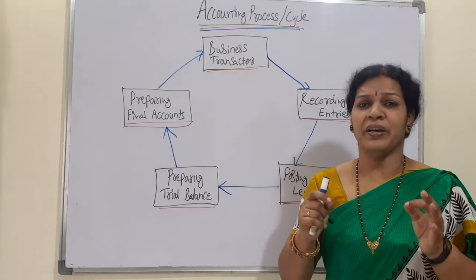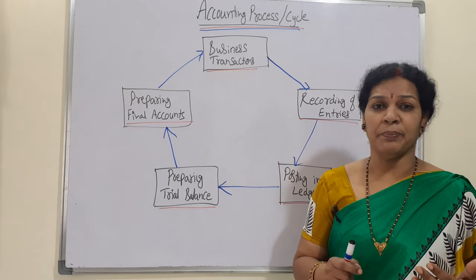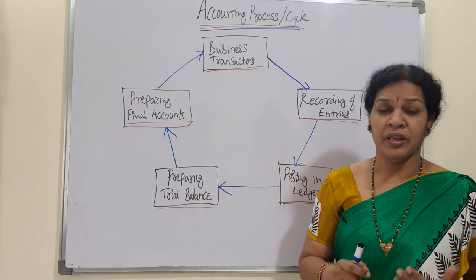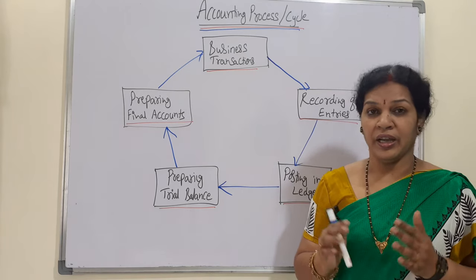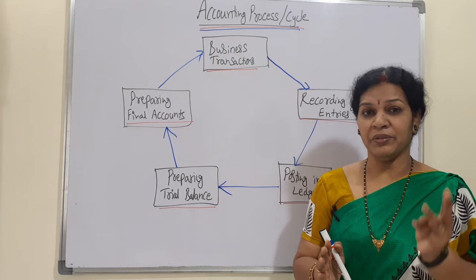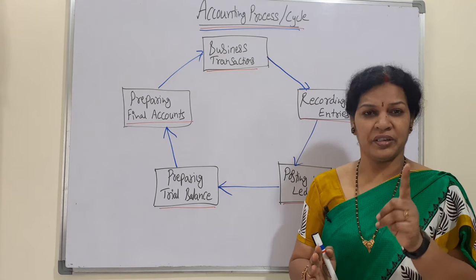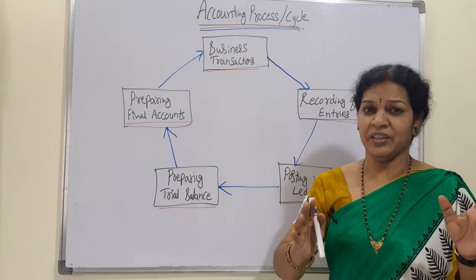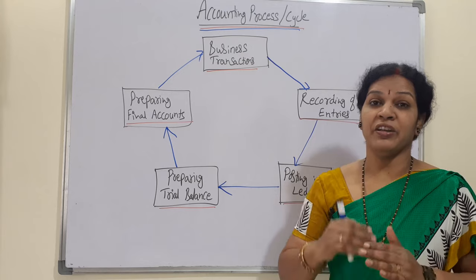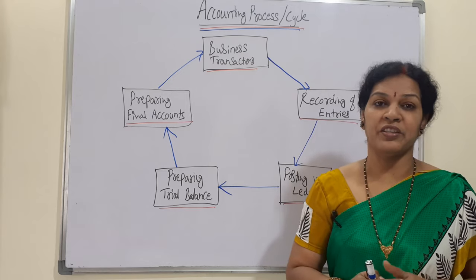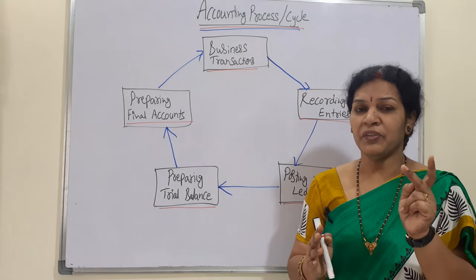Final accounts are very important — through them we can determine the company's financial position and know exactly how much profit or loss the company is earning. In final accounts there are three stages: trading account, profit and loss account, and balance sheet. In the trading account, we record transactions related to the manufacturing level.